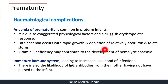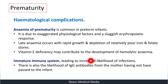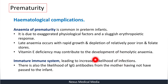An immature immune system leads to increased likelihood of infections. There is also the risk that IgG antibodies from the mother have not yet crossed the placenta to provide the infant with passive immunity. In a preterm baby, these IgG antibodies may not have transferred yet, leaving the infant unprotected until its own immune system develops.